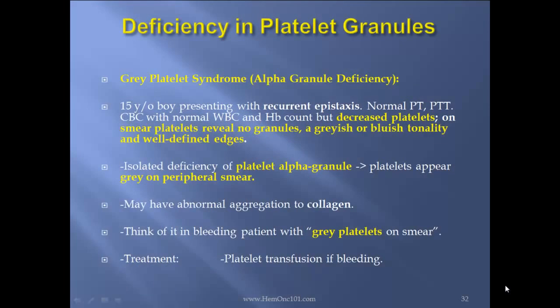Deficiency in platelet granules — gray platelet syndrome, that is alpha granule deficiency. Case report: 15-year-old boy presenting with recurrent epistaxis. Normal PT/PTT. CBC with normal WBC and hemoglobin but decreased platelets. On smear, platelets reveal no granules, a grayish or bluish tonality and well-defined edges. This is an isolated deficiency of platelet alpha granules — platelets appear gray on peripheral smear and may have abnormal aggregation to collagen. Think of it in bleeding patients with gray platelets on smear. Treatment: platelet transfusions if bleeding.